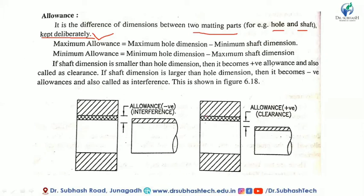If the shaft dimension is smaller than the hole dimension, then it is called positive allowance, and it is also called clearance.